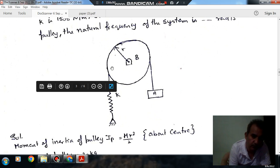So this is your pulley and this is radius R. This is mass A attached to the pulley. This is spring of stiffness K.